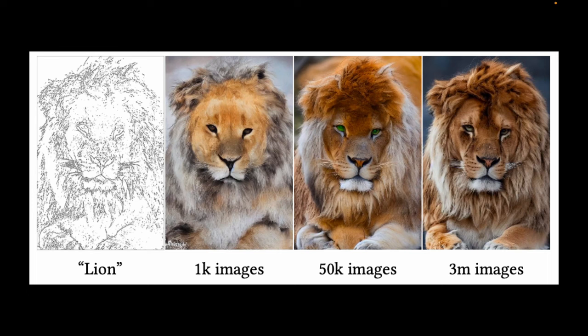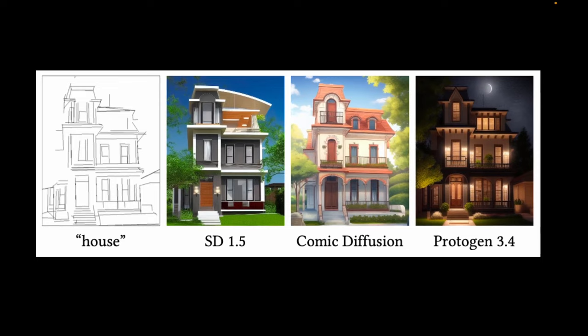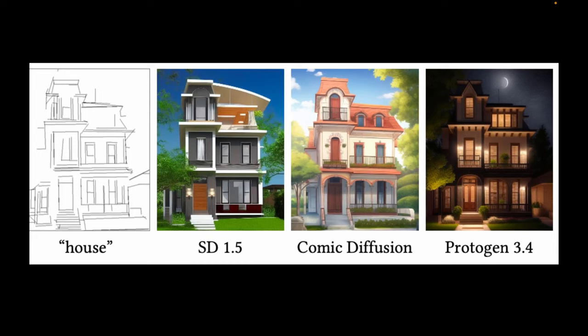Lastly, ControlNet is not just restricted to stable diffusion, it can also be applied to other generative models like Cosmic Diffusion and Protogen. So to wrap things up, these are the variety of control images you can provide as input, along with the generated images for each of them. It includes sketches, normal maps, depth maps, edges, and human pose.